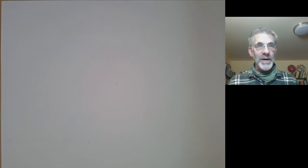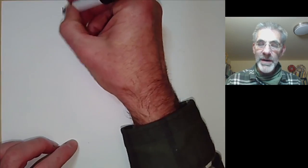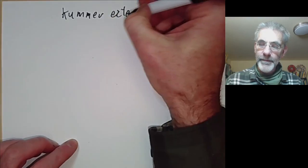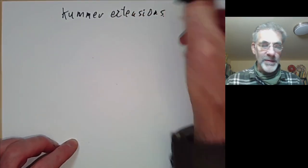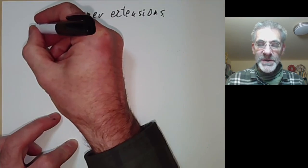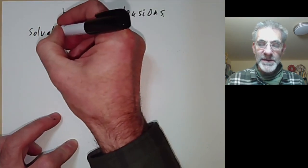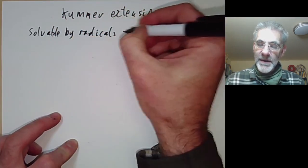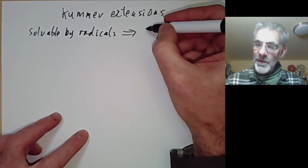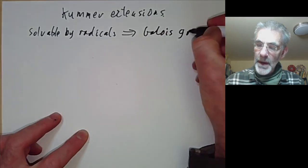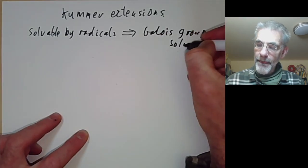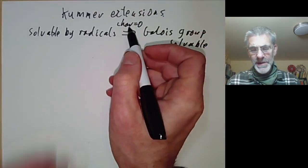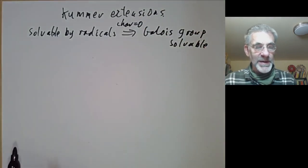This lecture is part of an online Galois theory course and will be about Kummer extensions. In the previous lecture we showed that if you can solve a polynomial by radicals, this is closely connected with the Galois group being solvable — at least if the characteristic is equal to zero. If the characteristic is equal to p, there are some additional complications.